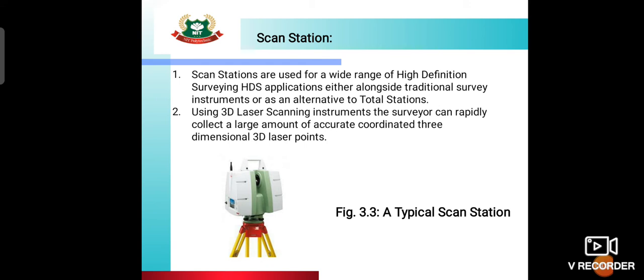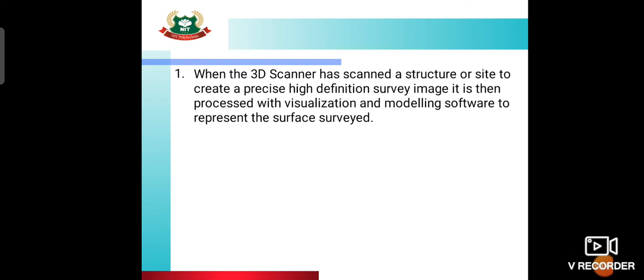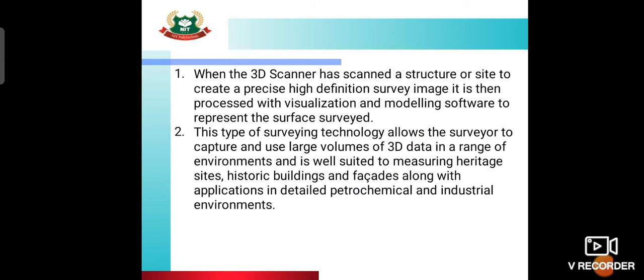Using 3D laser scanning instruments, the surveyor can rapidly collect a large amount of accurate, coordinated 3D laser point data. When the 3D scanner has scanned a structure or site to create a precise high-definition survey image, it is then processed for modeling — visualized using 3D modeling software. This survey technology allows the surveyor to capture large volumes of 3D data across a range of environments, and is well suited to measuring heritage sites and historic buildings.